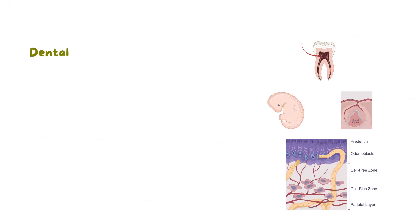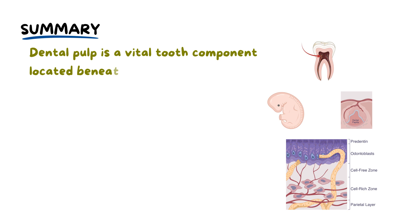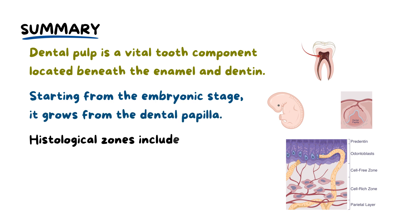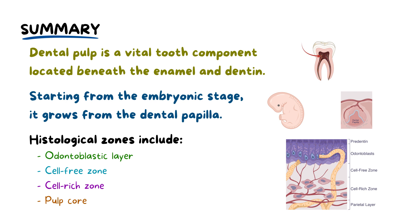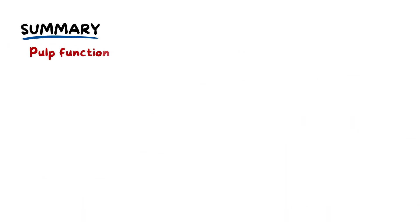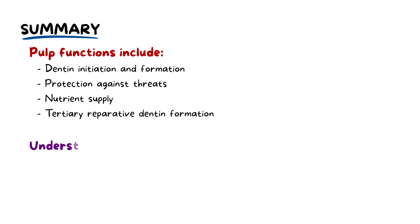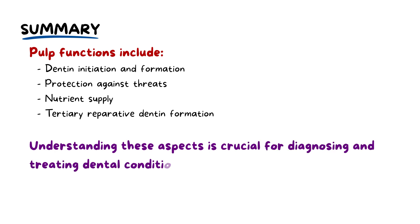To summarise, the dental pulp is a vital tooth component located beneath the enamel and dentine. Its development starts in the embryonic stage, originating from the dental papilla. The pulp's histological zones include the odontoblast layer, cell-free zone, cell-rich zone and the pulp core. The pulp's functions include dentine initiation and formation, protection against threats, nutrient supply and tertiary reparative dentine formation. Understanding these aspects is crucial in dentistry for diagnosing and treating dental conditions effectively.